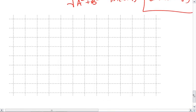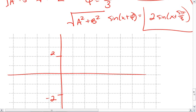If I wanted to graph this, I'm graphing a sine wave with an amplitude of 2. And we're shifting sine 5 pi thirds to the left.